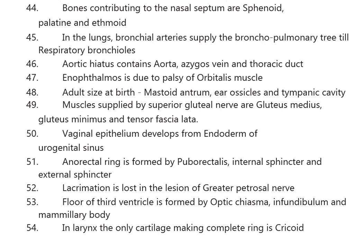The anorectal ring is formed by the puborectalis, internal sphincter, and external sphincter. Lacrimation is lost in lesions of the greater petrosal nerve. The floor of the third ventricle is formed by the optic chiasma, infundibulum, and mammillary body.